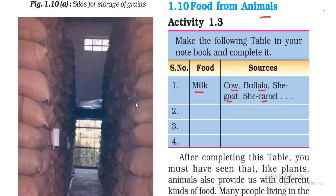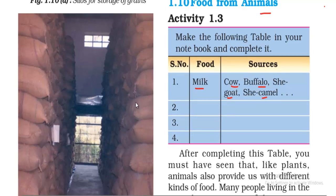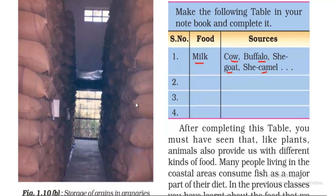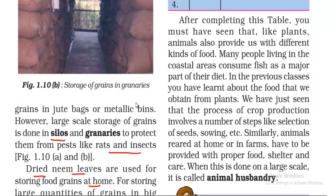Other things we get from animals include fish, meat, and chicken. There are many things we get from animals, so you can complete the table. After completing this table, you will see that just like plants, animals also provide us with different kinds of food.